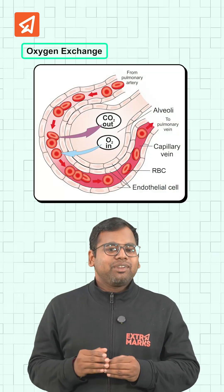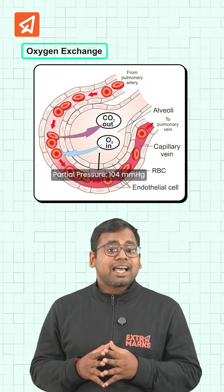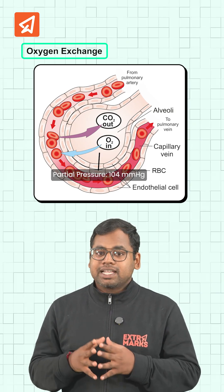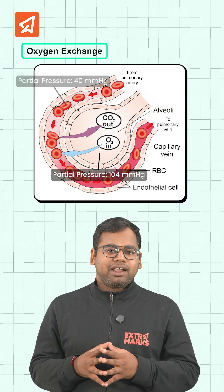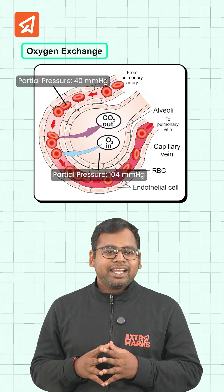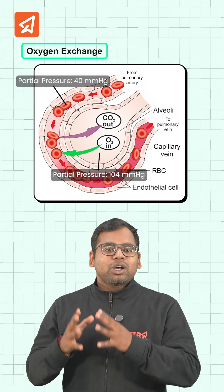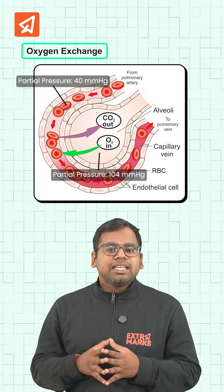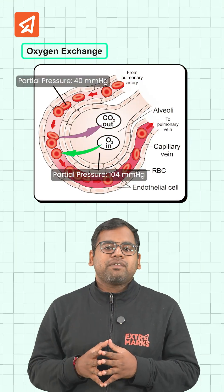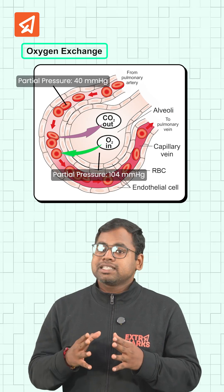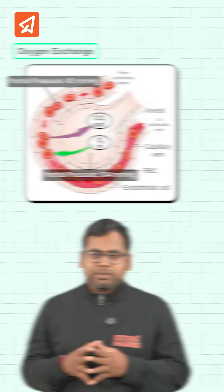Let's talk about the exchange of oxygen. In alveoli, the partial pressure of oxygen is about 104 mmHg, whereas in deoxygenated blood it's only around 40 mmHg. This creates a diffusion gradient, so oxygen moves from alveoli to blood. Diffusion continues until the partial pressure of oxygen in the blood rises to match the alveolar level, around 104 mmHg.